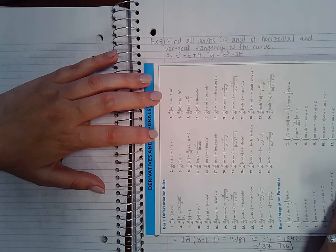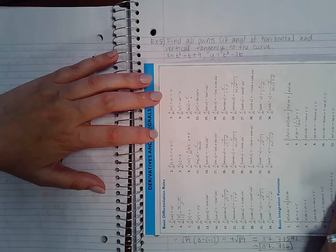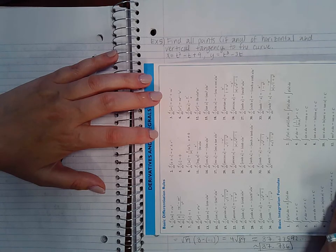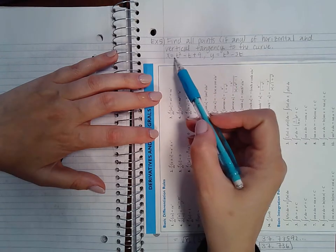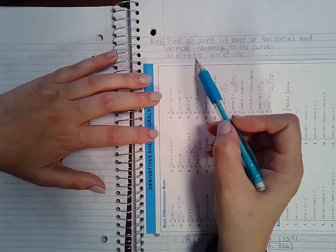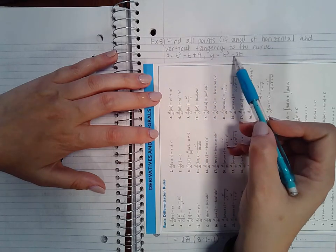For example 5 it says find all points if any of horizontal and vertical tangency to the curve. x equals t squared minus t plus 9, y equals t cubed minus 3t.